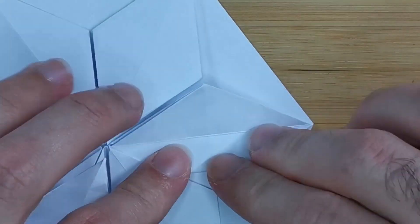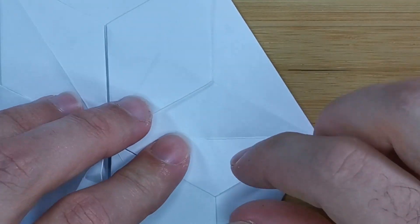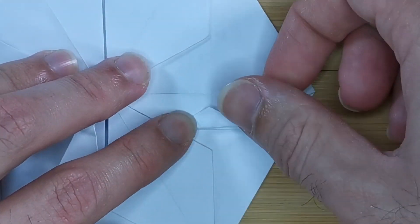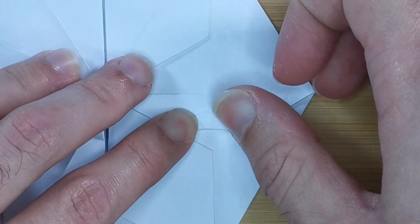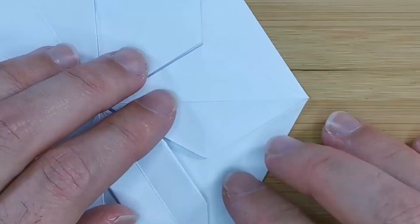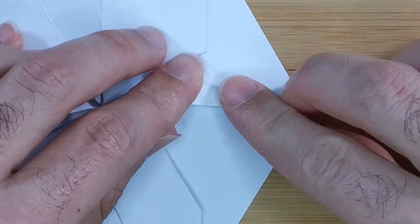Now fold this flap back down and also fold the top flap down and we want to make an identical crease mark. So we can just align the top flap with the bottom flap and crease there. Now unfold and repeat this for the other five branches of the snowflake.